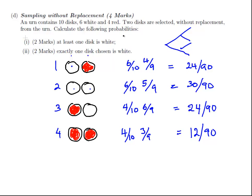So, it's 24 plus 30 plus 24 over 90. And that gives us a probability of 78 out of 90. I'll just leave it as 78 out of 90. It's just a bit of simple calculator work now to express that as a decimal.